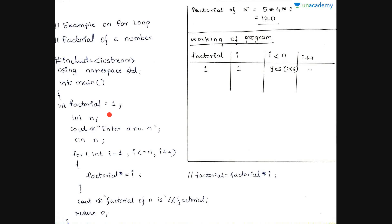Let us check the working of the program. First, factorial is initialized to 1 — because we are multiplying factorial with some number, it cannot be 0. If it were 0, factorial would always remain 0. So we initialize factorial to 1. The initialization statement sets i to 1 and is evaluated only once at the start of the loop. Then the condition i <= n is checked.